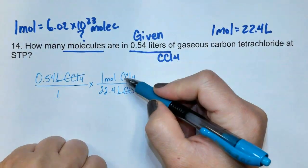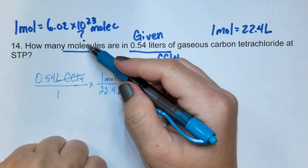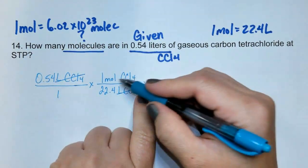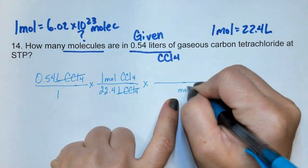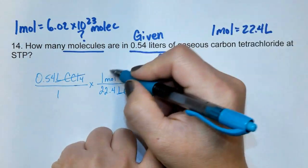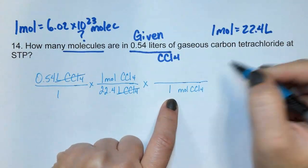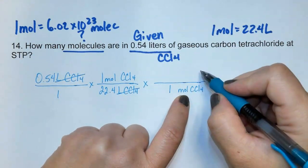Notice that liters cancel. I'm now at moles, but I don't want moles, I want molecules. So I need to go one more step, times draw a line. I'm going to bring down the moles of CCl4, and I don't bring down the 1. However, it is going to be 1 mole of CCl4, because it's always 1 mole. And then we have options.